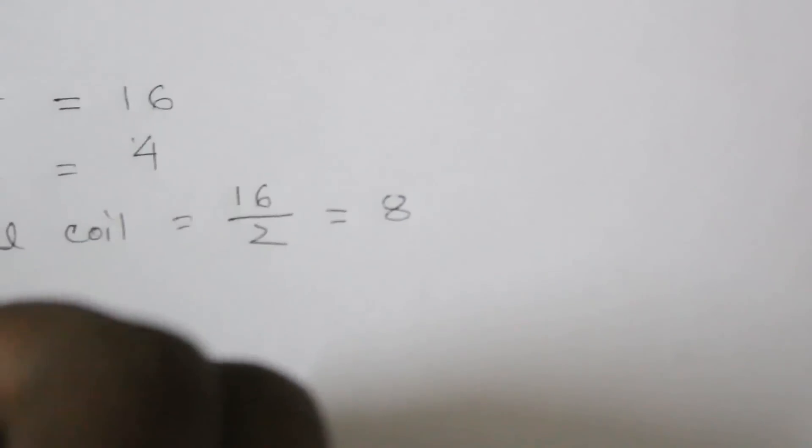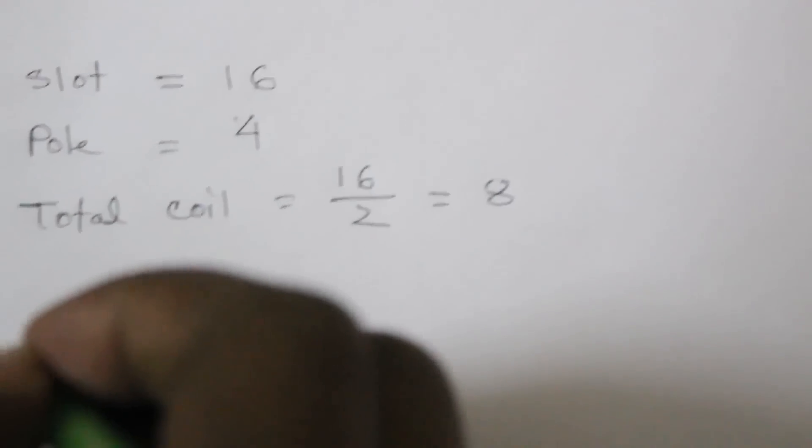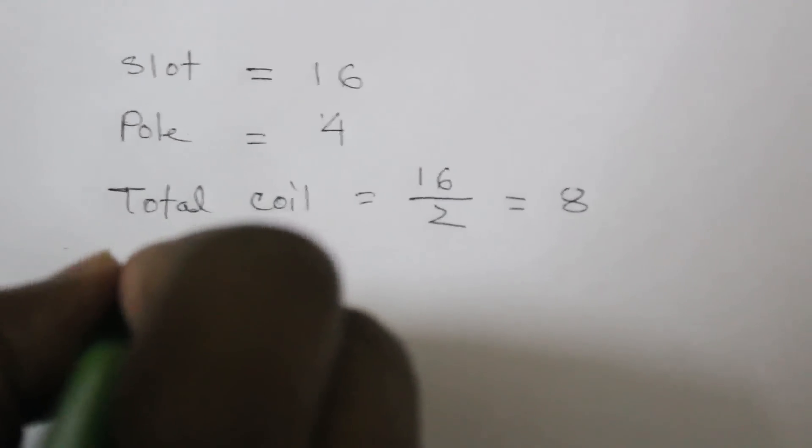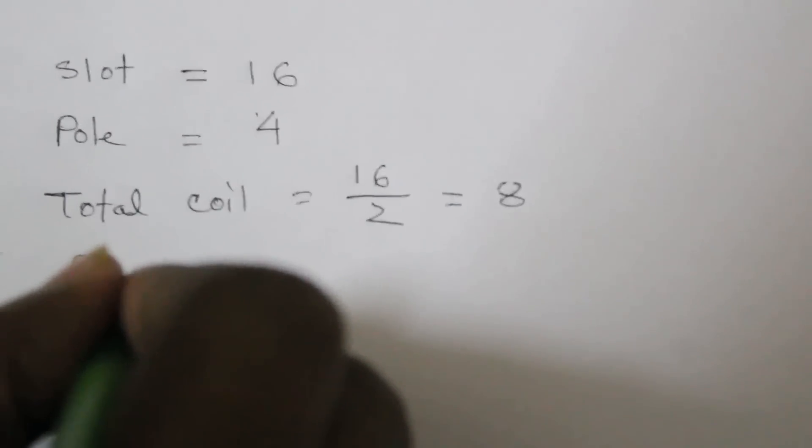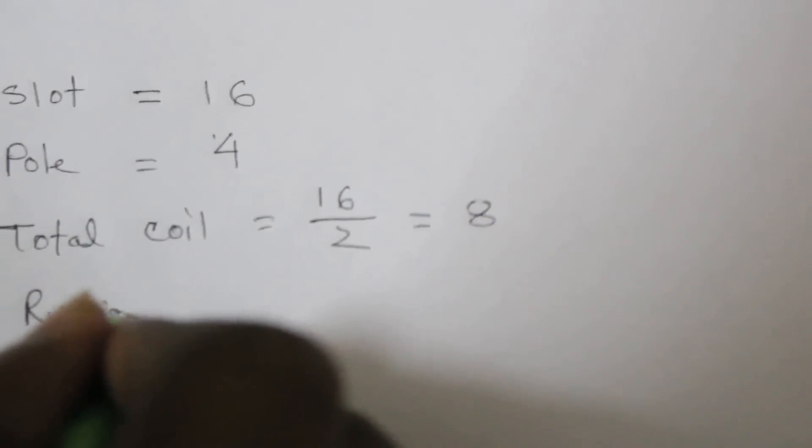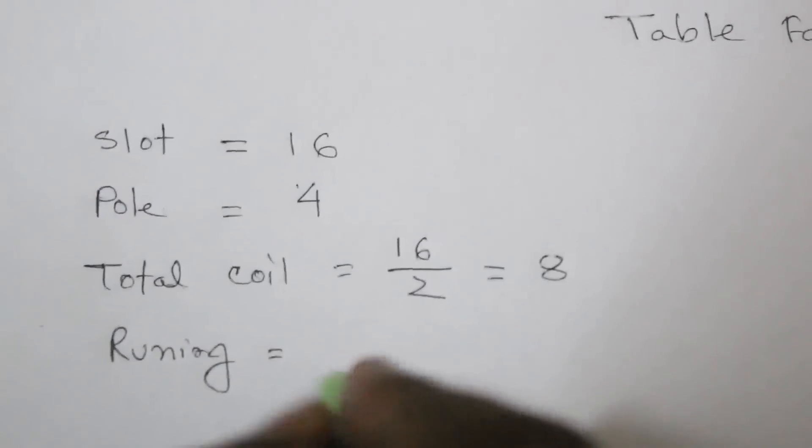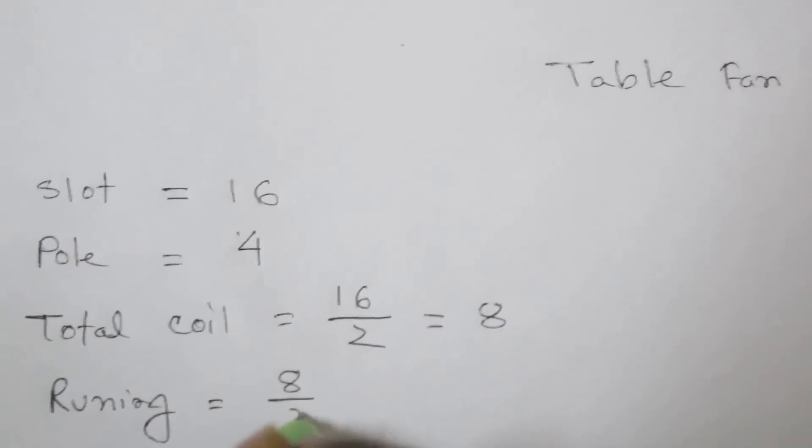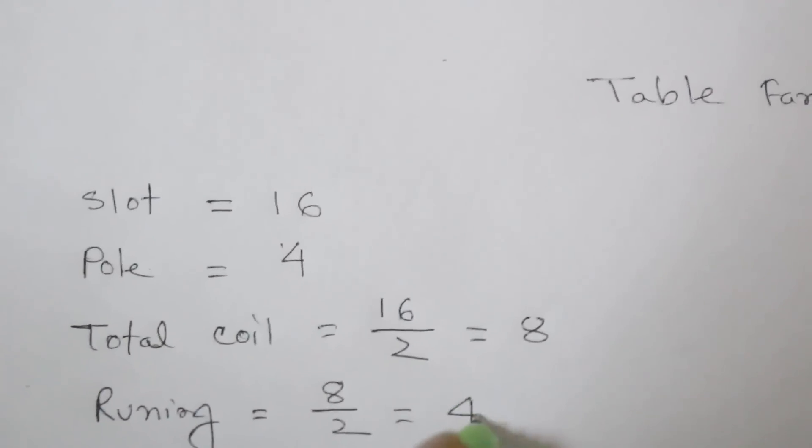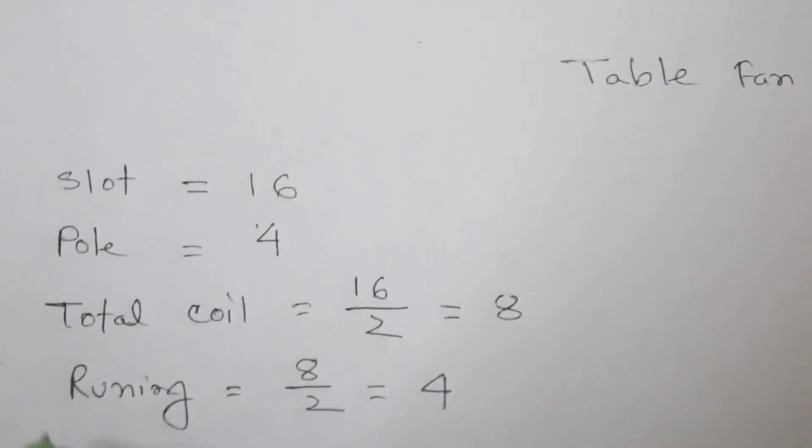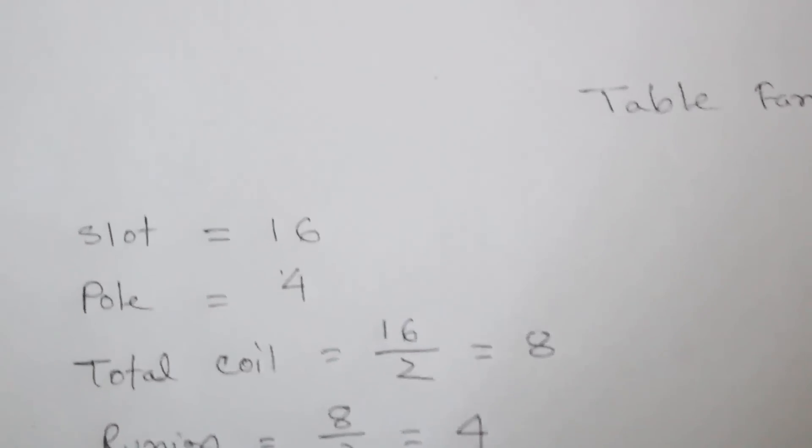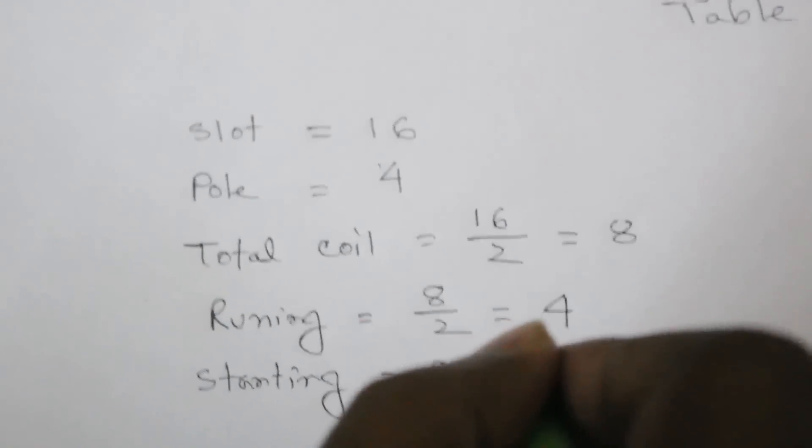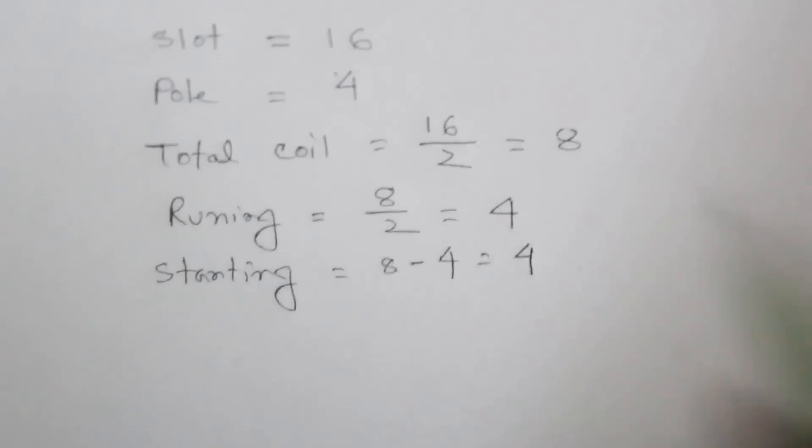Here running is main coil and starting is auxiliary coil. Running and starting is same number, so total 8 coil divided by 2. So running is now 4 coil, and starting is 8 minus 4, so 4.